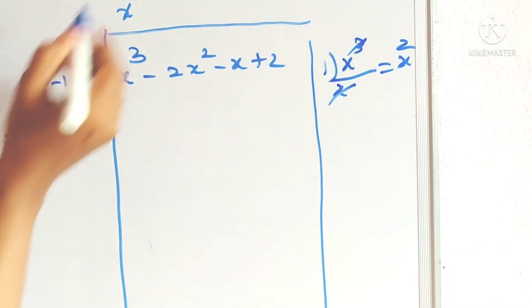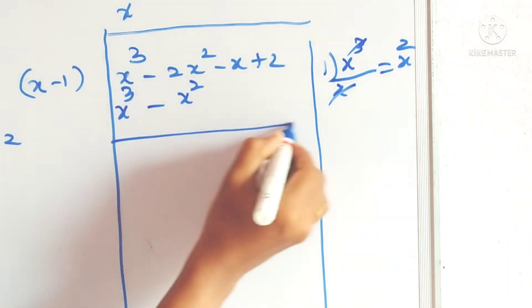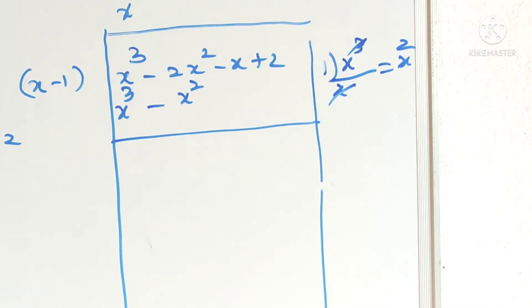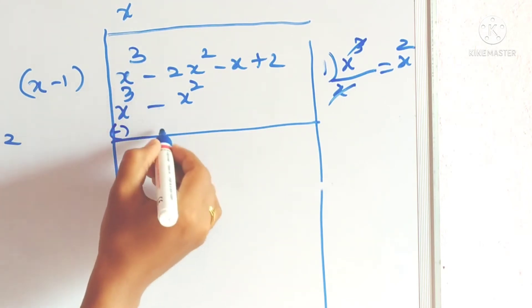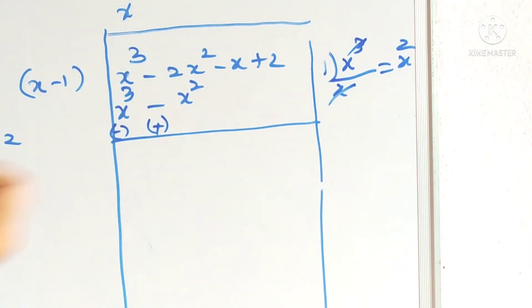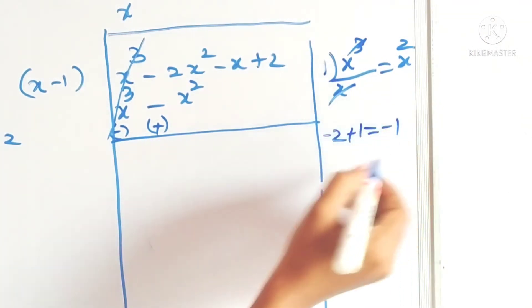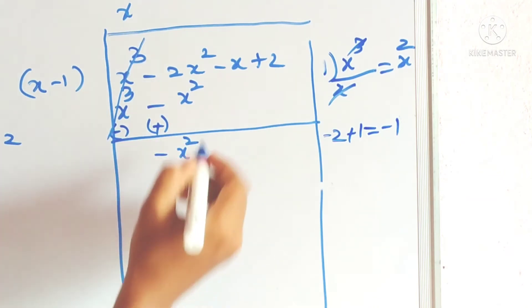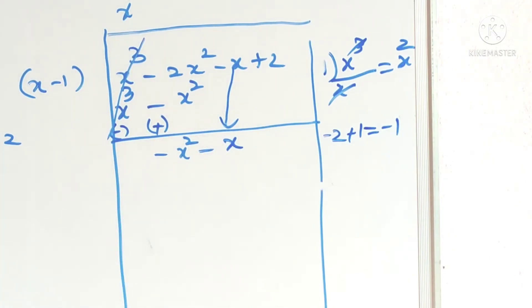x into x square is x cube. Minus 1 into x square is minus x square. Now just like in a normal division, we have to subtract — just change the signs. Minus becomes plus, and minus into minus is plus. Here minus 2 plus 1 gives minus 1 only, so minus x square. Bring down the next term — it will be minus x square minus x.